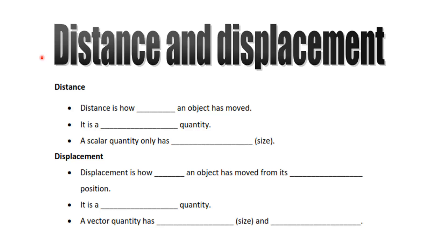Next, we look at distance and displacement. Distance is how far an object has moved — it is a scalar quantity, meaning it has only magnitude, that is size. Displacement is how far an object has moved from its original position. Displacement is a vector quantity, which has both magnitude and direction.